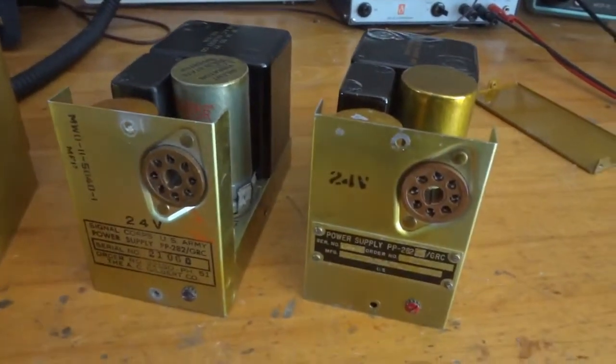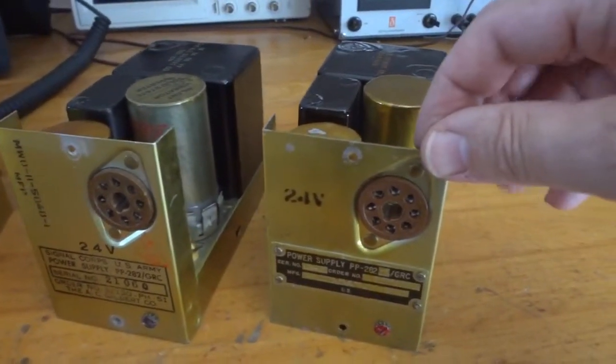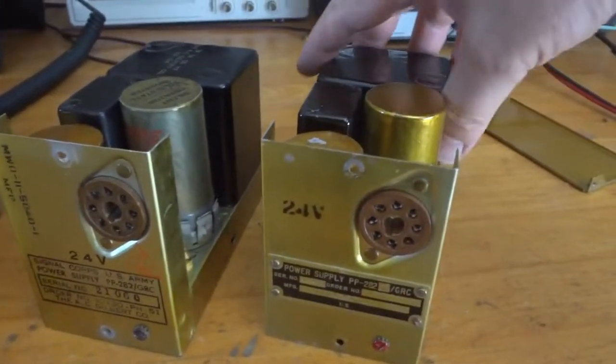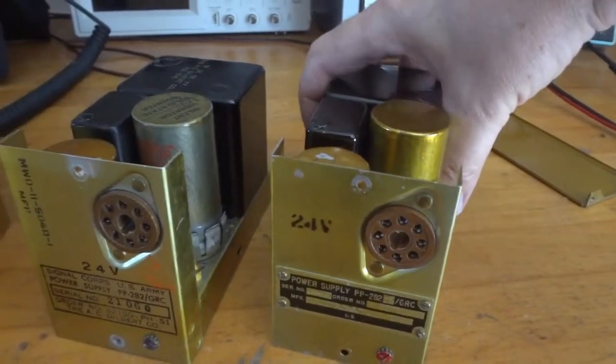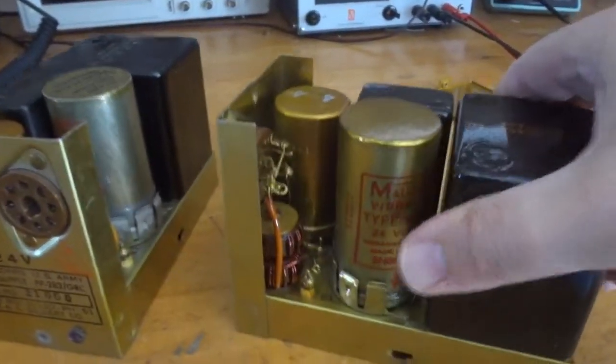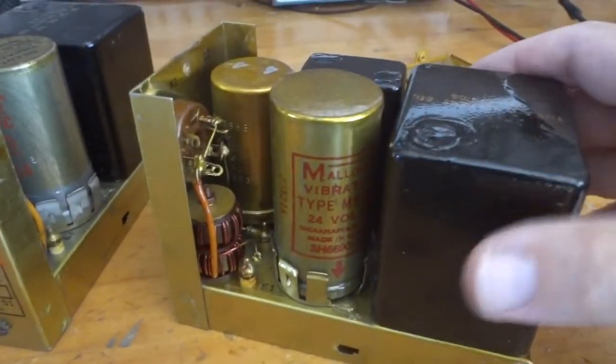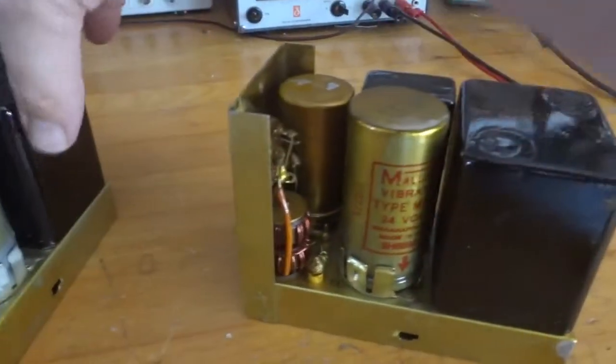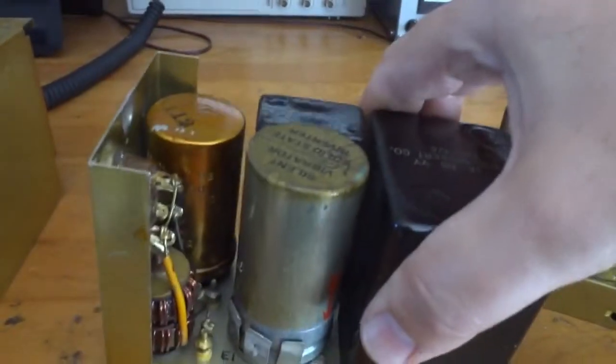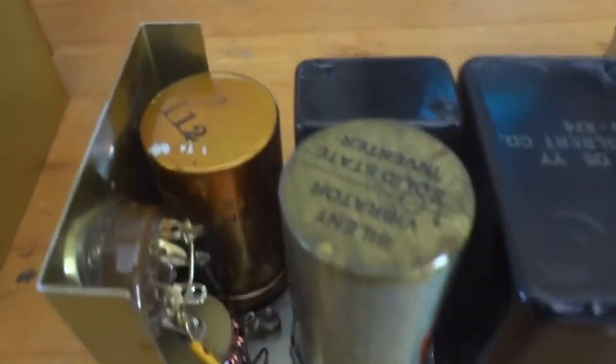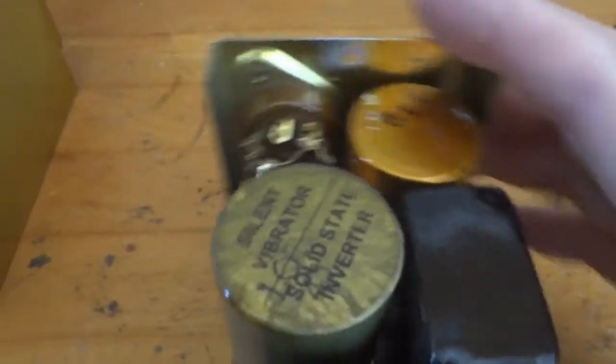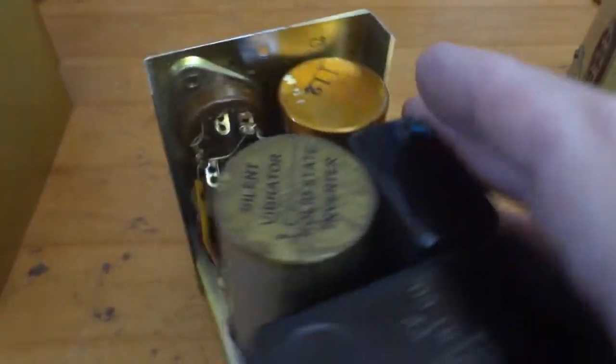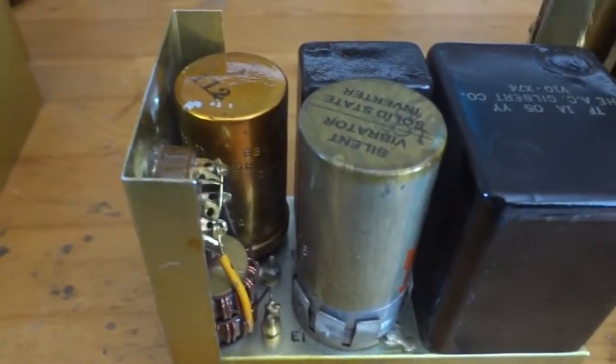Here you see two PP282 vibrator power supplies. 24 volts in for this particular one, 170 volts out. Here is the vibrator. This one has a regular vibrator that still works. This one I have equipped with a solid-state inverter. Silent vibrator solid-state inverter that was modified by myself.